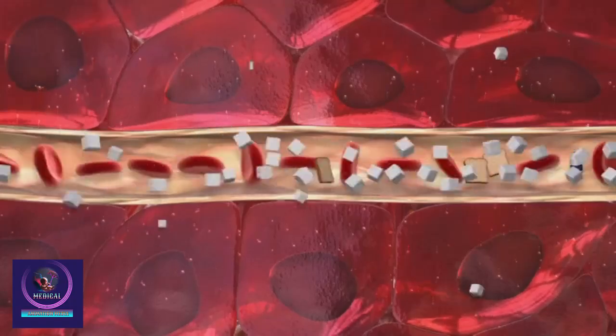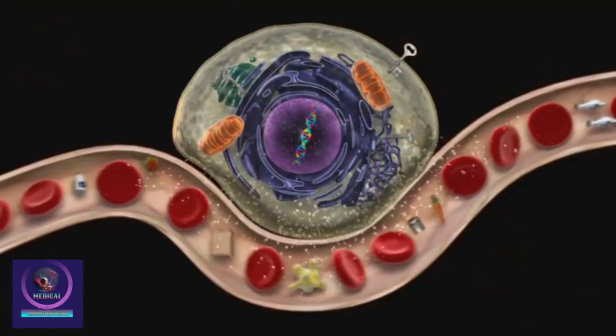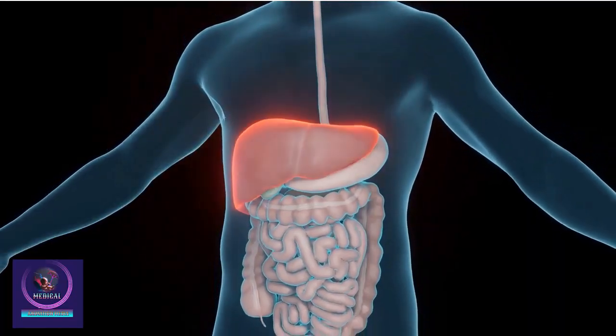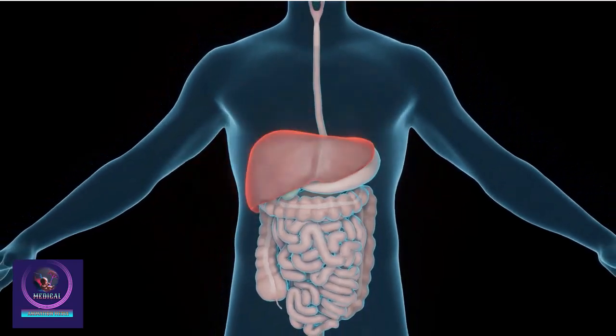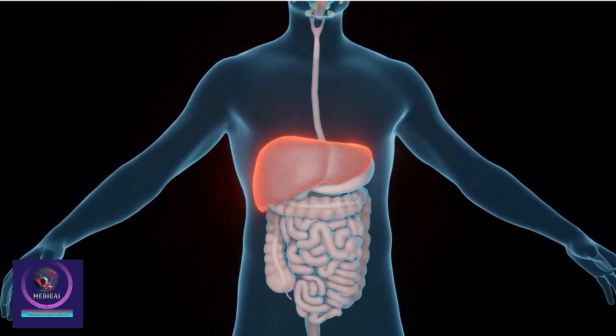The glucagon is released when there is not enough glucose in your blood. Glucagon's job is to travel to the liver and instruct the liver to release the stored glucose from its cells into the blood.